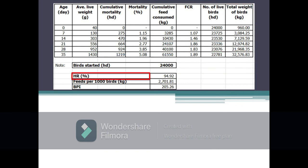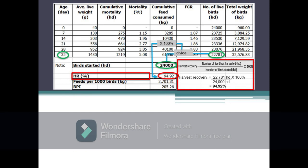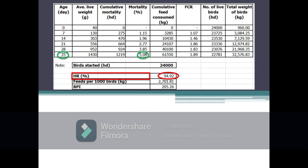Next parameter is the harvest recovery. Harvest recovery is the percentage of the population or flock harvested after the growing period, also called percent livability. It is calculated as the number of live birds harvested divided by the number of birds started, multiplied by 100 percent. As shown in the table, 22,781 birds were harvested at day 35 out of 24,000 birds started, giving a harvest recovery of 94.92 percent. This is also equal to 100 percent minus the percent mortality at harvest: 100% − 5.08% = 94.92%.